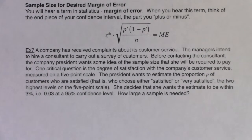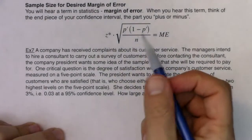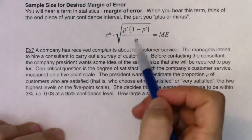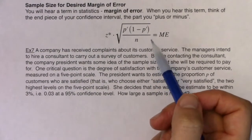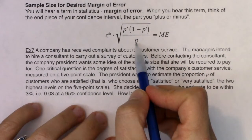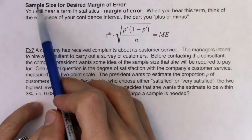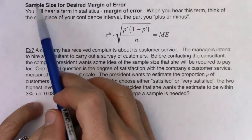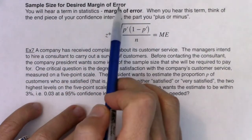Let's take a look at what I refer to as the backwards problems. That's not a technical term — I just think of it as not actually finding the confidence interval, but finding a sample size. So to me it's kind of backwards, where usually I'm given a sample size and I find a confidence interval. But what we're going to do here is figure out what is the sample size for a desired margin of error.